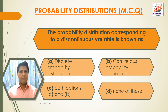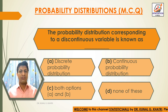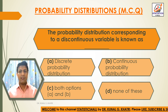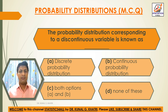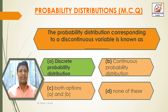First question: the probability distribution corresponding to a discontinuous variable is known as. Option A: discrete probability distribution. Option B: continuous probability distribution. Option C: both options A and B. Option D: none of these. The answer is option A, discrete probability distribution.